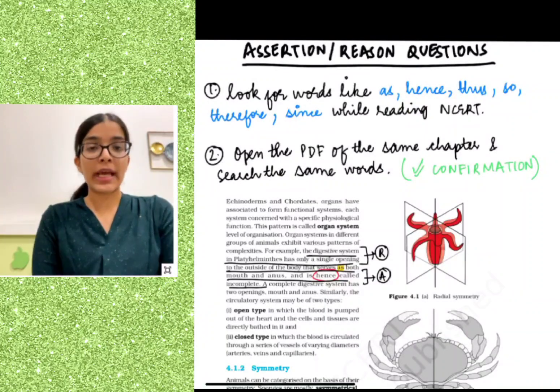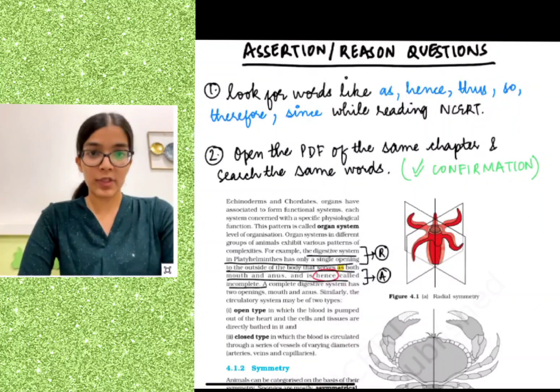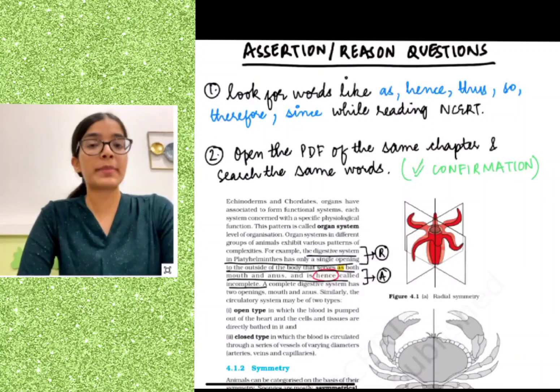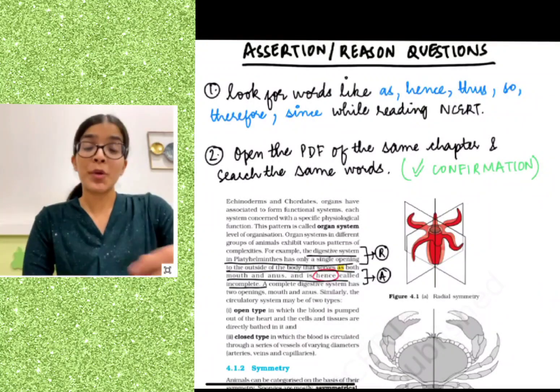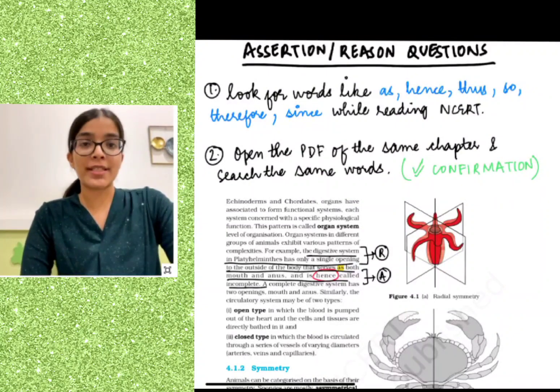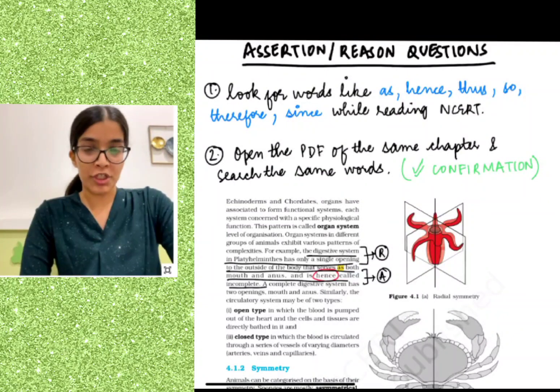Hi everybody, I am Sandhya Puri and I scored 690 marks out of 720 in NEET 2022, which was my first attempt. We all know that there were a lot of statement-based and assertion-reason questions in the 2022 biology section.